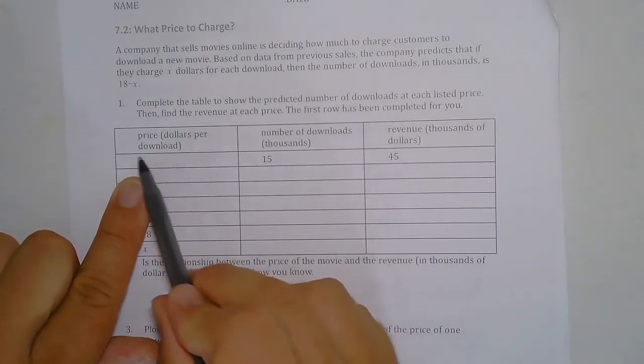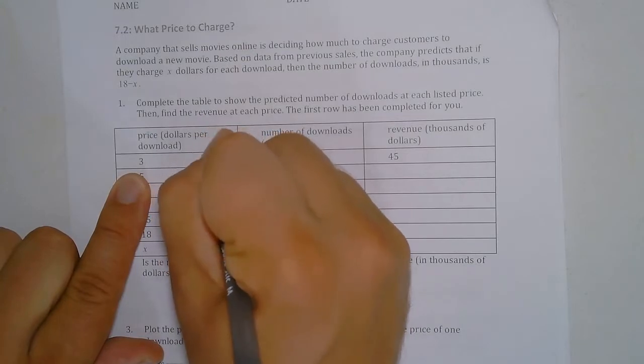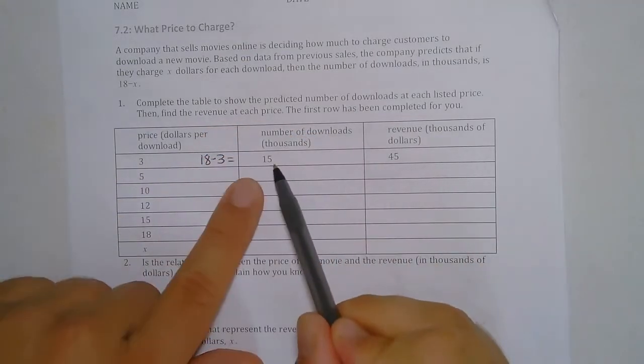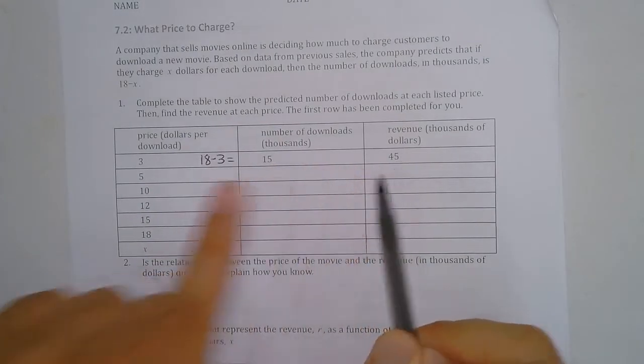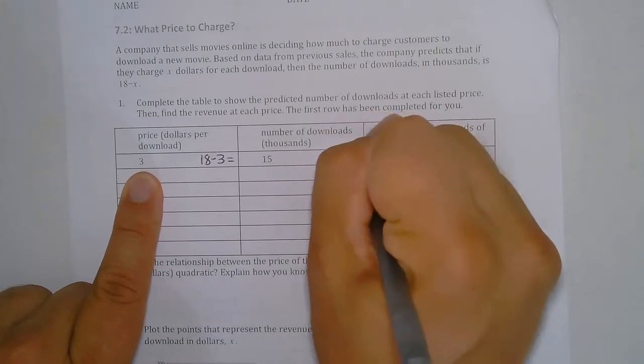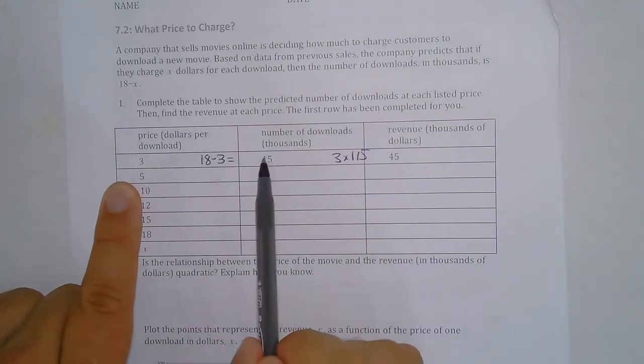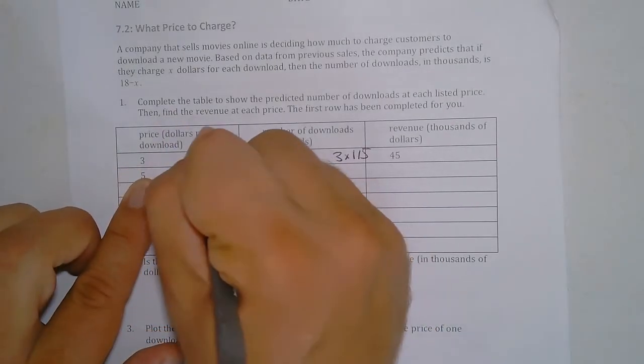For example, if we have a price of three dollars, we do 18 minus 3 and that gives us 15,000 downloads. And then to figure out the revenue brought in, we do 3 times the 15. So we multiply these two columns to get that. To continue that, if the price is 5, we do 18 minus 5.